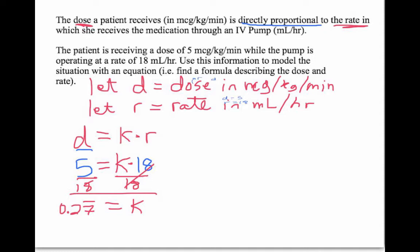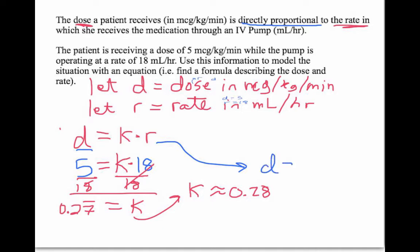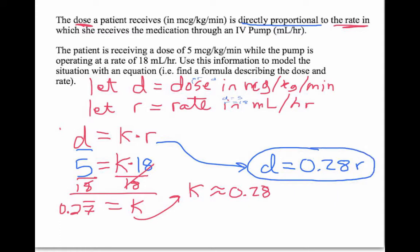It may depend on your instructor, but in this class I will ask you to round to two significant digits — typically the hundredths place, but for very small numbers use two significant figures. In this case, K is approximately 0.28. That value of K is the constant of variation describing the relationship between D and R. So instead of D equals K times R, knowing K equals 0.28, I can write the dose equals 0.28R.